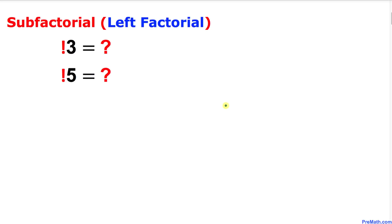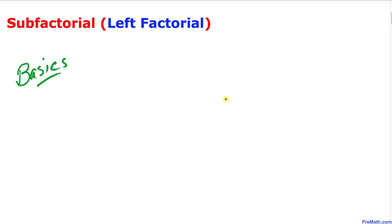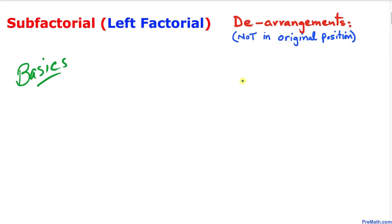Welcome to pre-math. In this video tutorial, our topic is sub factorial, sometimes called left factorial. The left factorial is represented by the factorial sign on the left-hand side of a number. I will show you how to calculate the value of sub factorial 3 as well as sub factorial of 5 in a step-by-step explanation. The sub factorial is also known as derangements.